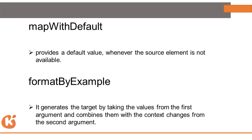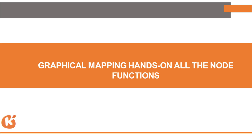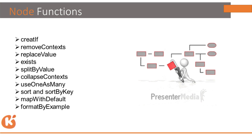Format By Example repeats a field value by generating the target based on values from the first argument, combined with the context change from the second argument — it copies the previous context and carries it to the next value. Node functions in message mapping include: Remove Context, Split By Value, Collapse Context, Sort, Sort By Key, Map With Default, and Format By Example.